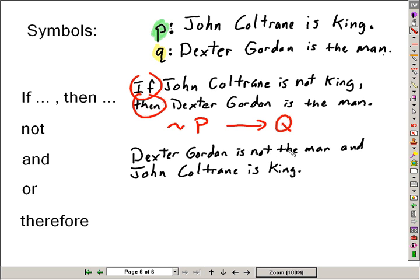Another example, Dexter Gordon is not the man, that would be tilde Q. And, using the and symbol, John Coltrane is king, represented with the letter P. Taking sentences and restating them in symbolic form.